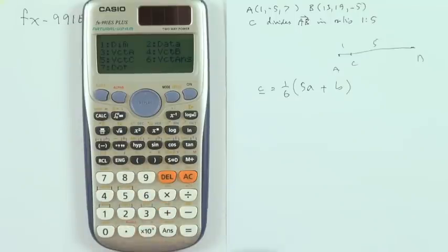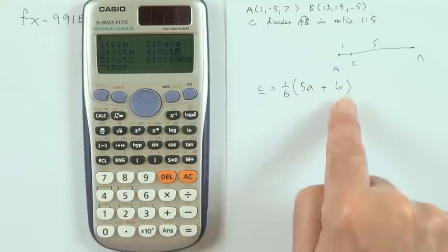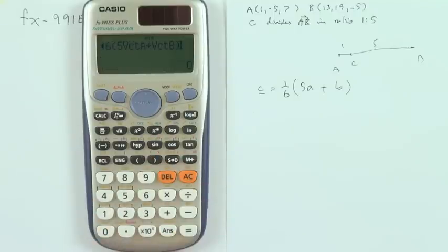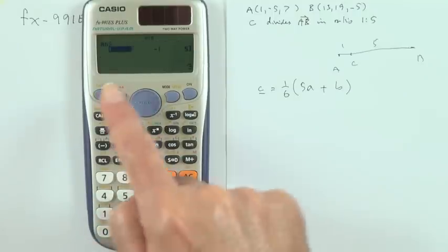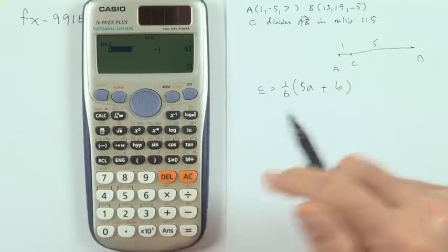So 5A would just be 5 times, I don't need the times sign. Enter the menu, pick out the vector, that was 3, plus, enter the vectors, pull out B, that was 4. Close the bracket, press equals, and it comes up with this: 3, negative 1, 5.